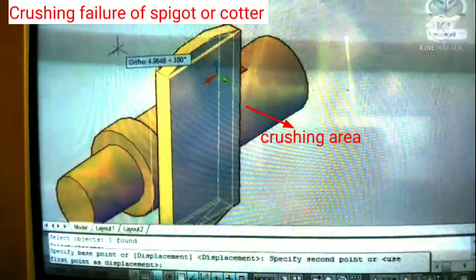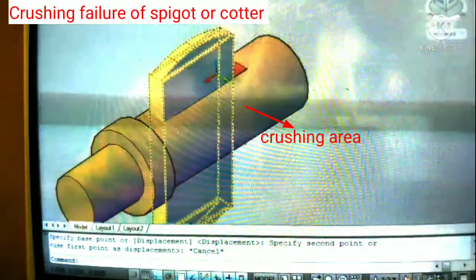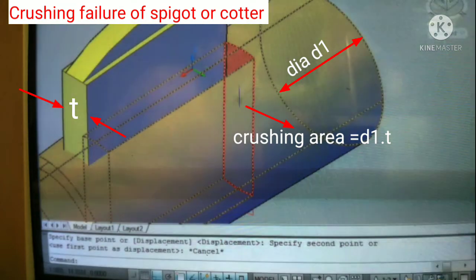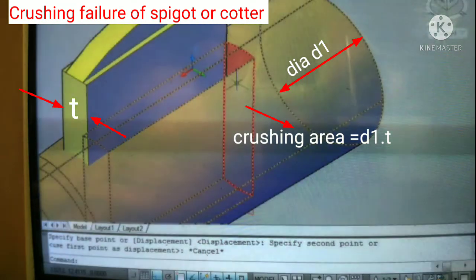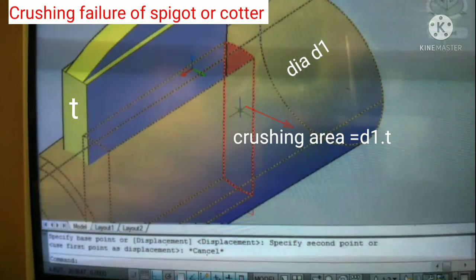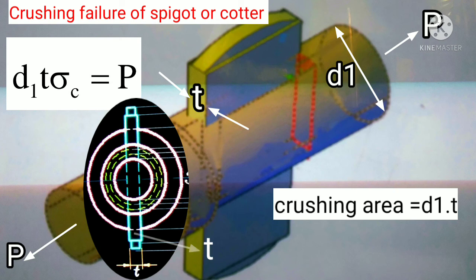Due to tensile load P there is a crushing failure between spigot and cotter in this area. The crushing area is D1 × T, where T is the thickness of cotter and D1 is the diameter of spigot. So we write D1 × T × sigma C = P, where sigma C is the crushing stress. From this formula we get the thickness of cotter, T.